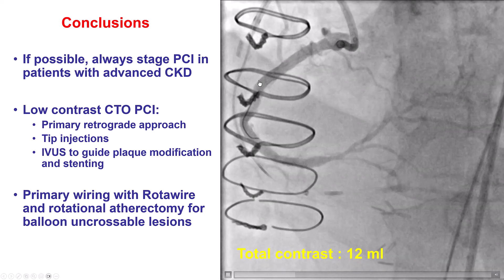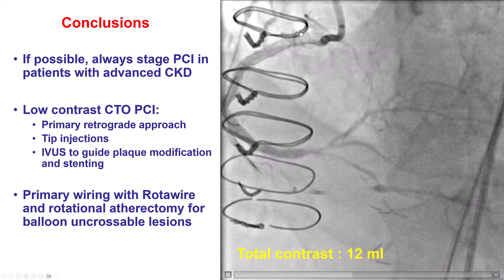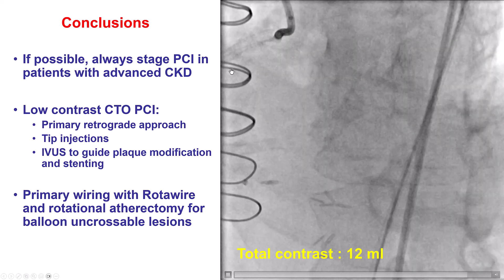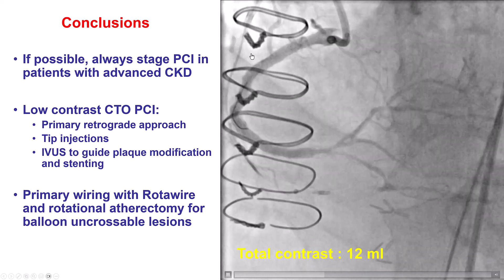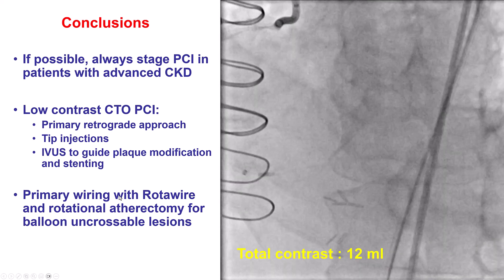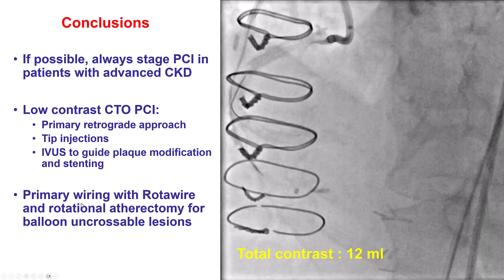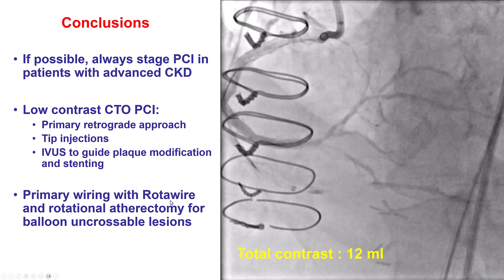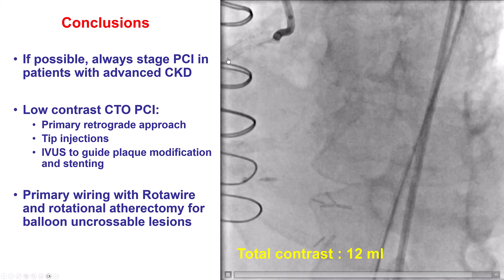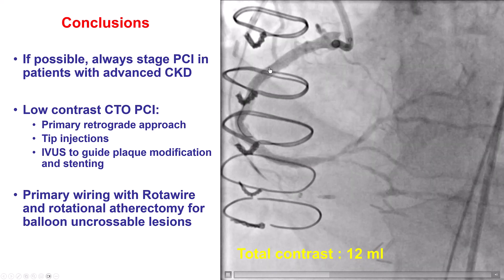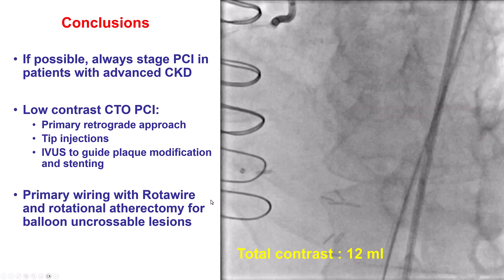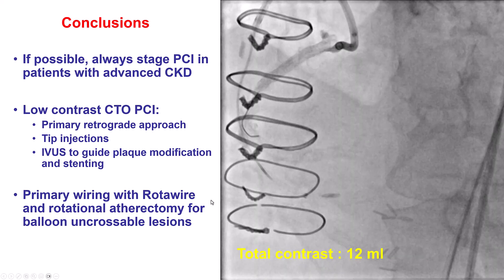Another difficulty in this case was the inability to advance microcatheters through the heavily calcified mid-right coronary artery. This was addressed by advancing a Rotawire and performing rotational atherectomy in the mid-RCA and subsequently in the distal RCA as well. Thank you.